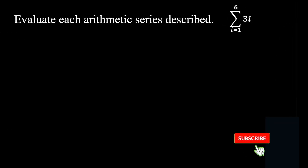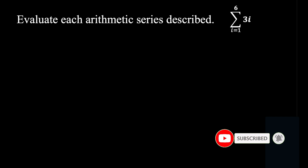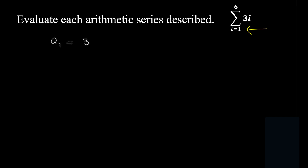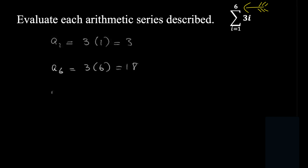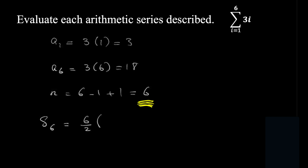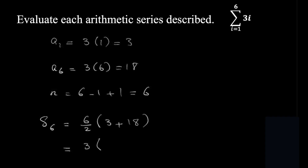Another example: sigma from i equals 1 to 6 for 3i. As mentioned, find the first term, last term, and number of terms, then replace in the sum formula. The first term a1 equals 3 times 1, which is 3. The last term a6 equals 3 times 6, which is 18. The number of terms equals 6 minus 1 plus 1, which is 6. So S6 equals 6 over 2 into 3 plus 18, which is 3 times 21, and 3 times 21 is 63.